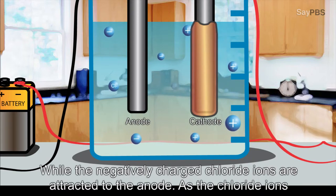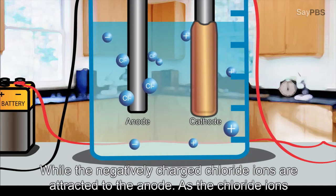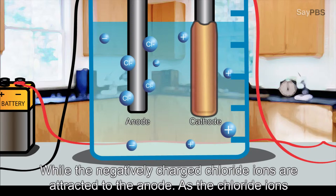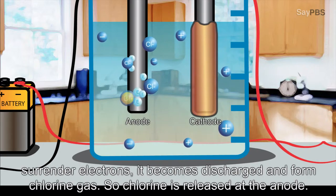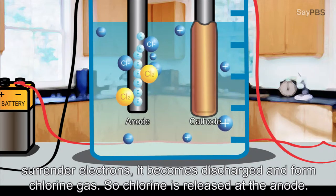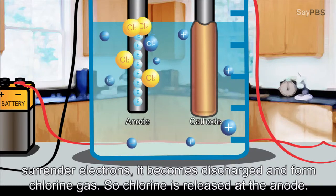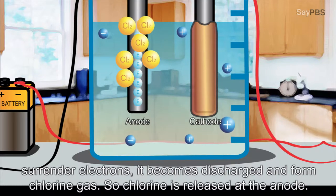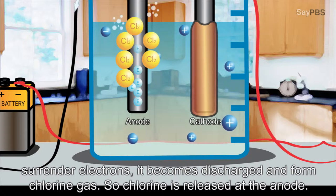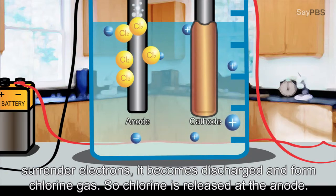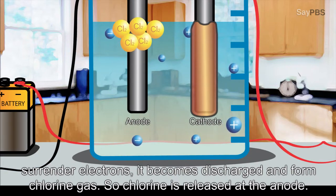While the negatively charged chloride ions are attracted to the anode. As the chloride ions surrender electrons, it becomes discharged and form chlorine gas. So, chlorine is released at the anode.